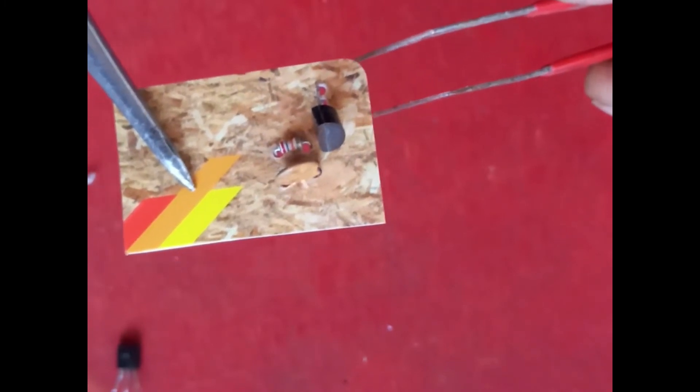Next up is the first NPN transistor. I've drilled three little holes in here and that's going to sit in there. That will be connected—if you look on your circuit diagram if you've got it—the base of it is going to this capacitor and resistor.